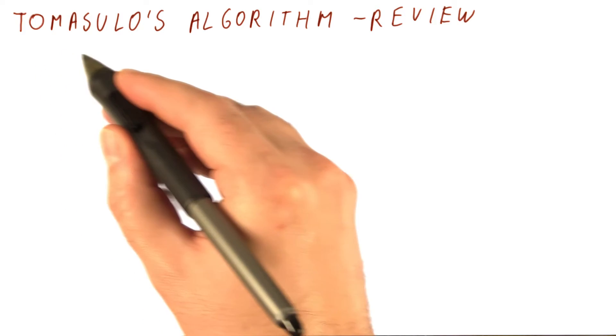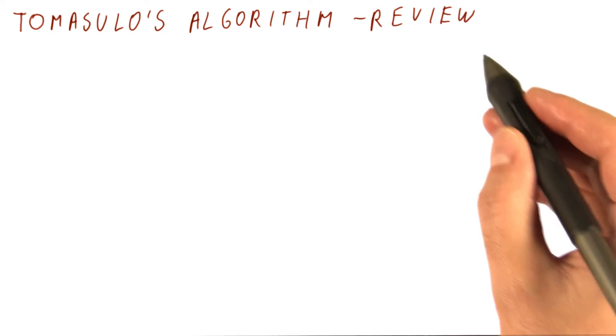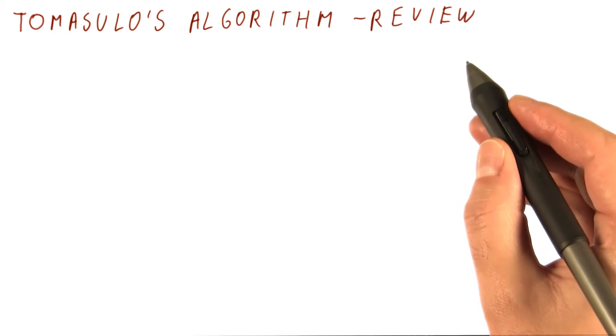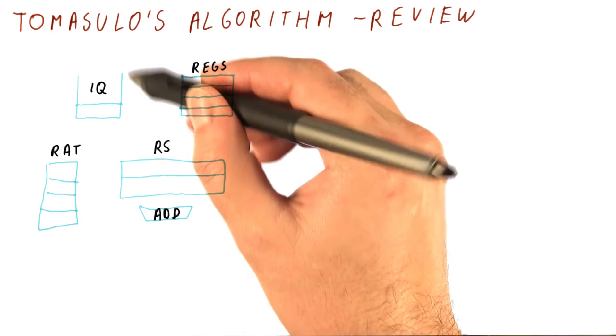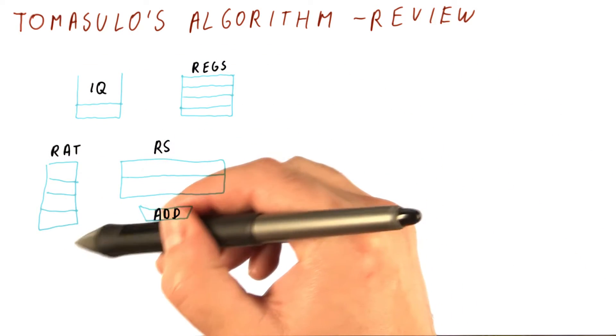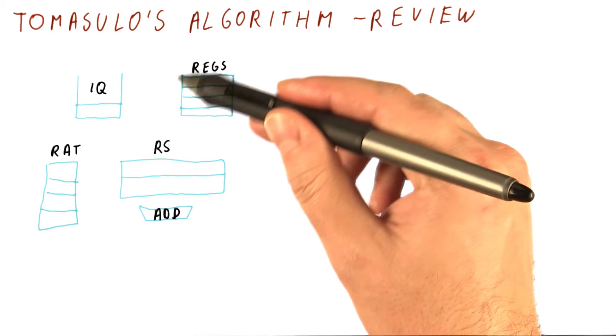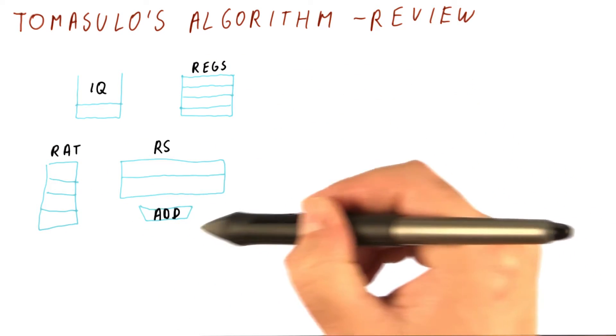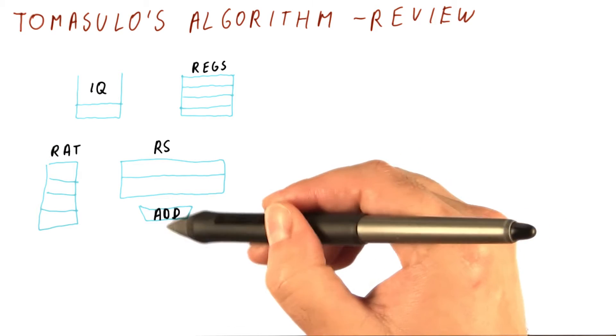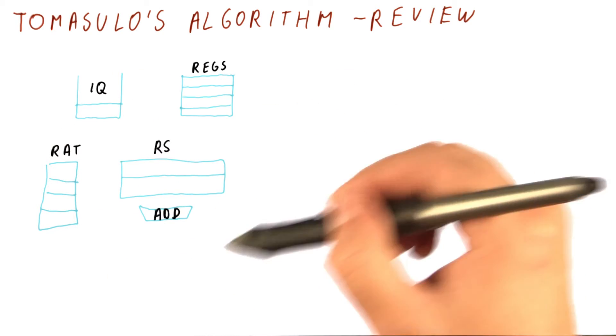Now that we have seen all the steps in Tomasulo's algorithm, let's take a moment and review the whole thing. This is our instruction queue, our RAT register aliasing table, the registers themselves, and let's say we only have the two reservation stations for the add subtract unit to make this more compact.